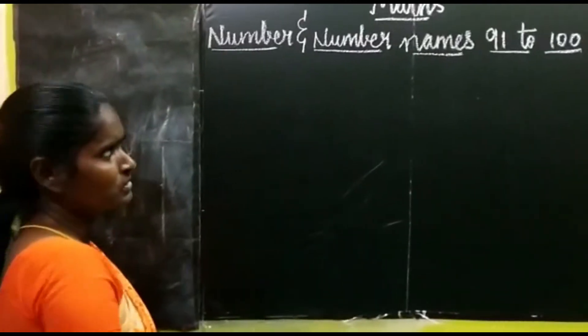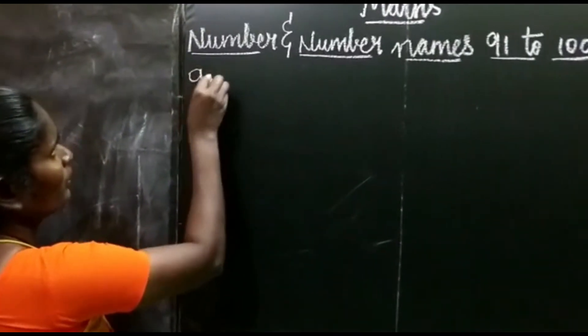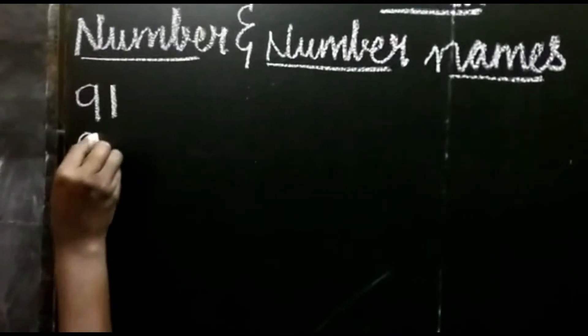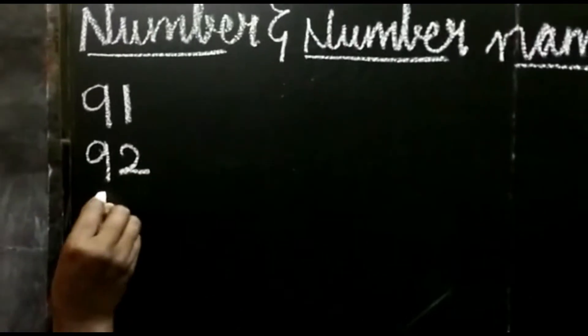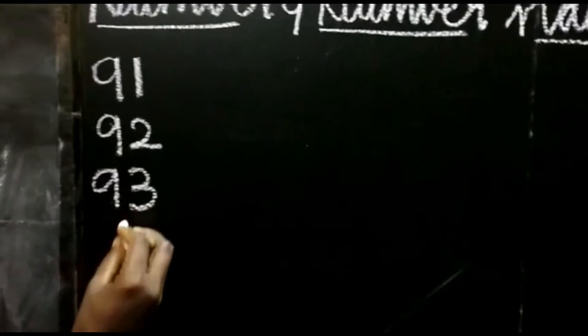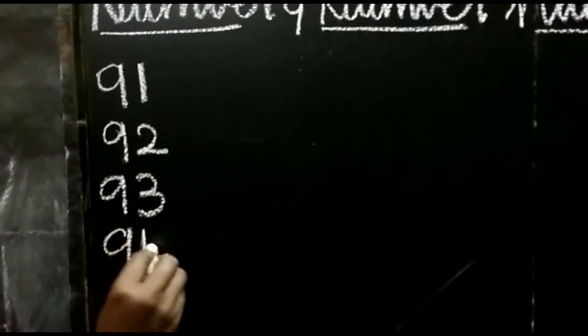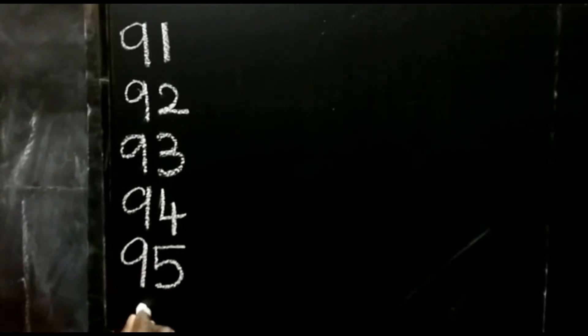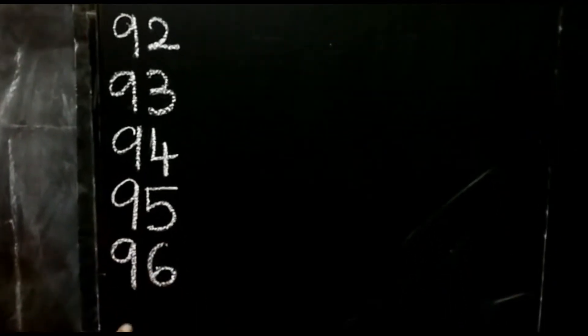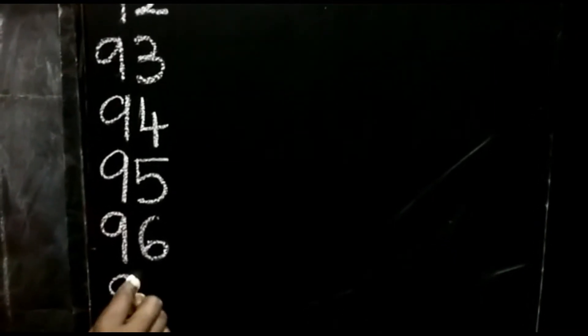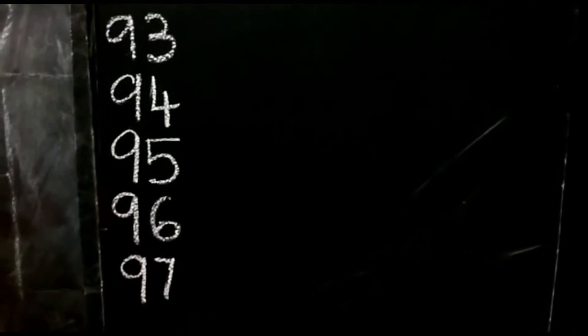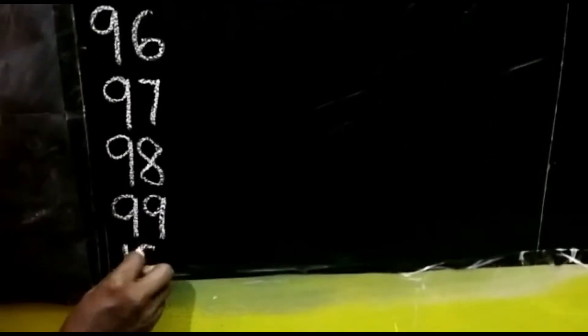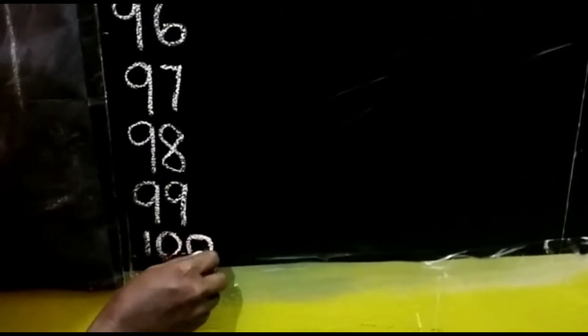First I am going to take the numbers: 9, 1 — 91. 9, 2 — 92. 9, 3 — 93. 9, 4 — 94. 9, 5 — 95. 9, 6 — 96. 9, 7 — 97. 9, 8 — 98. 9, 9 — 99. 1, 0, 0 — 100.